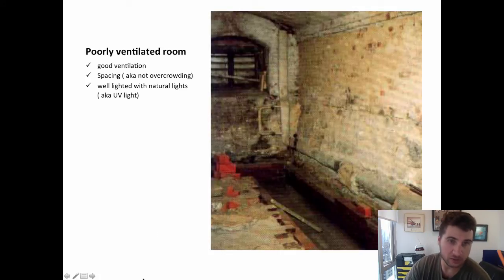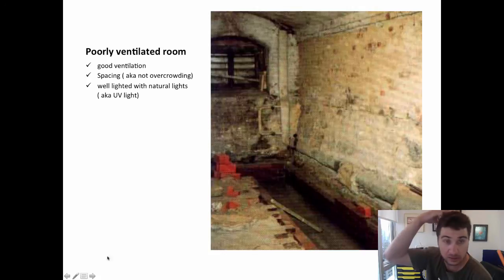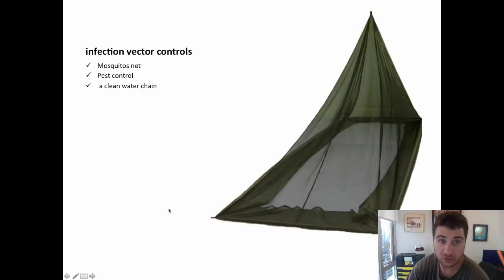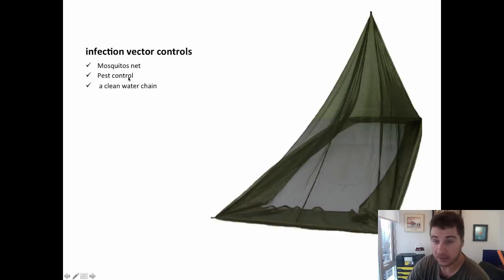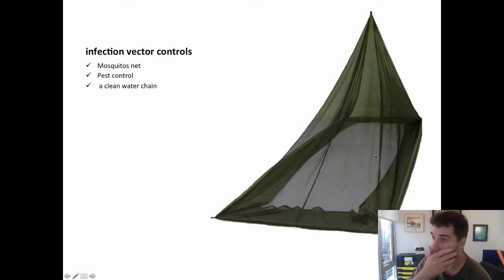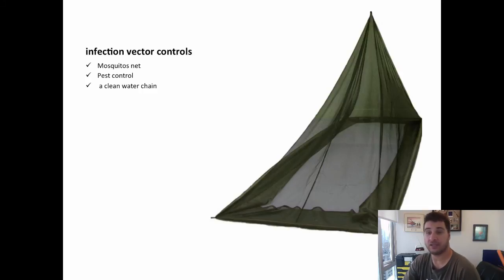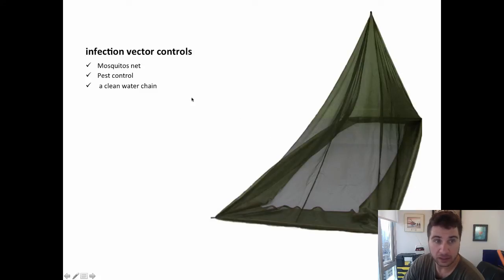Another important environmental factor is infection vector control. Mostly the vectors are pests — rats, pigeons, or any other pests. Even in the city, pigeons are basically flying rats, and you also have squirrels which carry a lot of vectors. And there's also a clean water chain we'll talk about more.